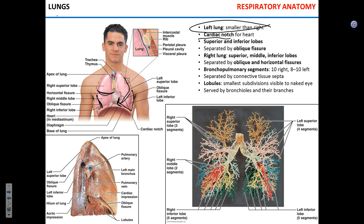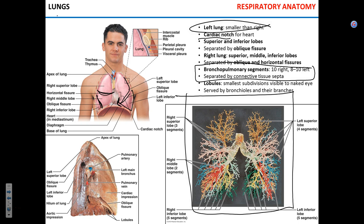Each lung is further divided into bronchopulmonary segments, which are physically separated units. Going even further, the smallest part of the lung visible to the naked eye is called a lung lobule, served by bronchioles.